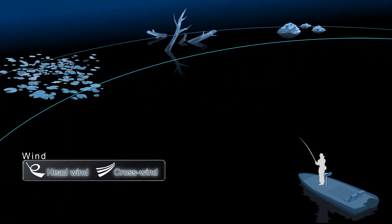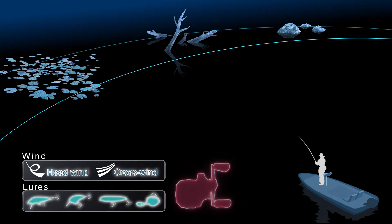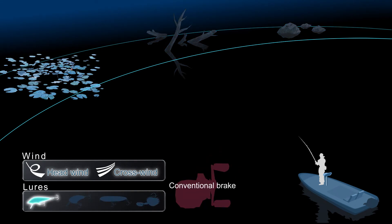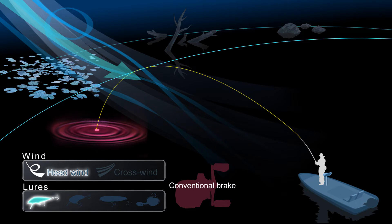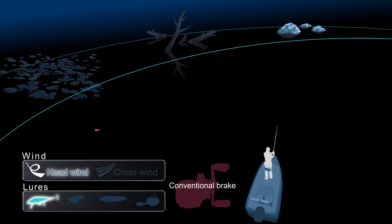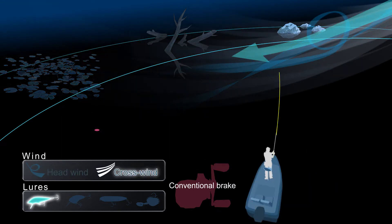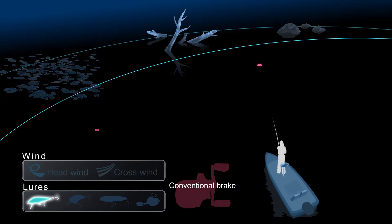No other manual adjustment is required. Conventional brake systems require more thumbing and more adjustment to the brake to best match lures and conditions. With conventional brakes, an incorrect adjustment can greatly limit casting distance and cause backlash.